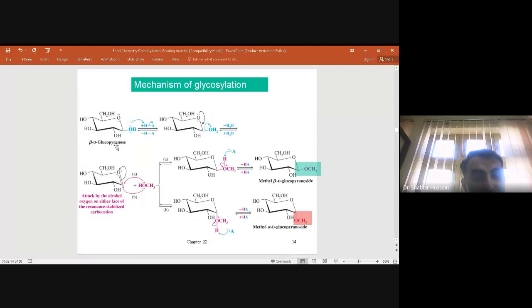Suppose this is beta-glucopyranose in which the hydroxy group is at the equatorial position. When it reacts with acid, the oxygen, which has two lone pairs, abstracts a proton from the acid, and as a result, elimination occurs.